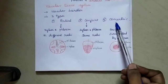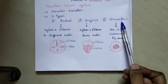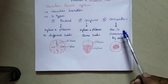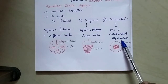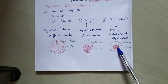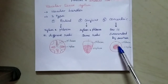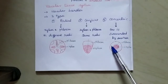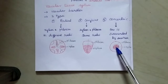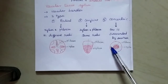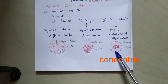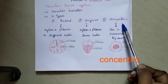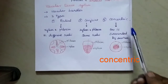The third one is the concentric vascular bundle. Here, one is surrounded by the other. For example, sometimes the phloem surrounds the xylem or the xylem surrounds the phloem. This type of arrangement is known as a concentric vascular bundle.